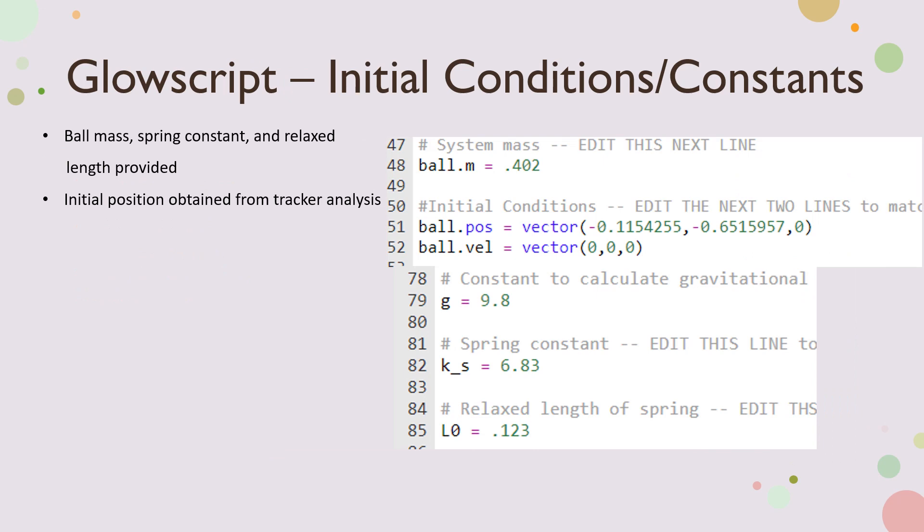So this is GlowScript, the model, the initial conditions and constants. We have the ball mass, spring constant, and relaxed length provided, which you see here, here, and here. And then the initial position right here is obtained from the tracker, which I just said in the previous slide. And here's the gravitational constant.